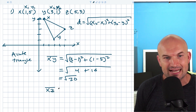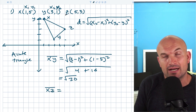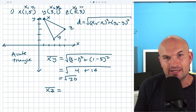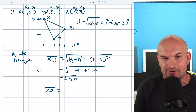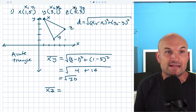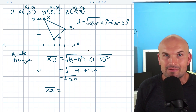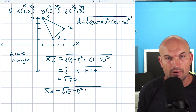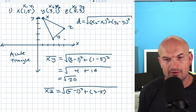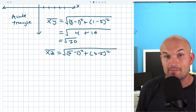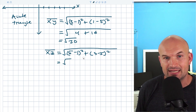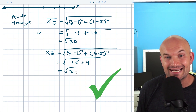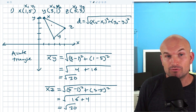Now let's verify XZ. For XZ, I'm going to do the exact same thing. Using this formula, you can use X3, Y3 — the subscripts are just a way to differentiate. So instead of X2 minus X1, I'll do X3 minus X1, and Y3 minus Y1. Let's plug everything in: this is going to be (five minus one) quantity squared plus (three minus five) quantity squared. Five minus one is four, four squared is sixteen, and three minus five is negative two, negative two squared is positive four. So you can see that yes, XY and XZ are exactly equal to each other.